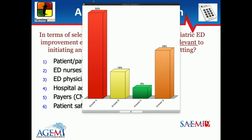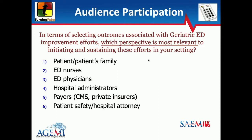Most of us are thinking patients or their families, with the second most common answer being hospital administrators, a smattering for nurse colleagues and physicians. Nobody voted for payers, and nobody voted for patient safety or hospital attorneys. The one with the most votes might not be the right answer — this represents the opinions in the room, and I wanted to see where we're all thinking.